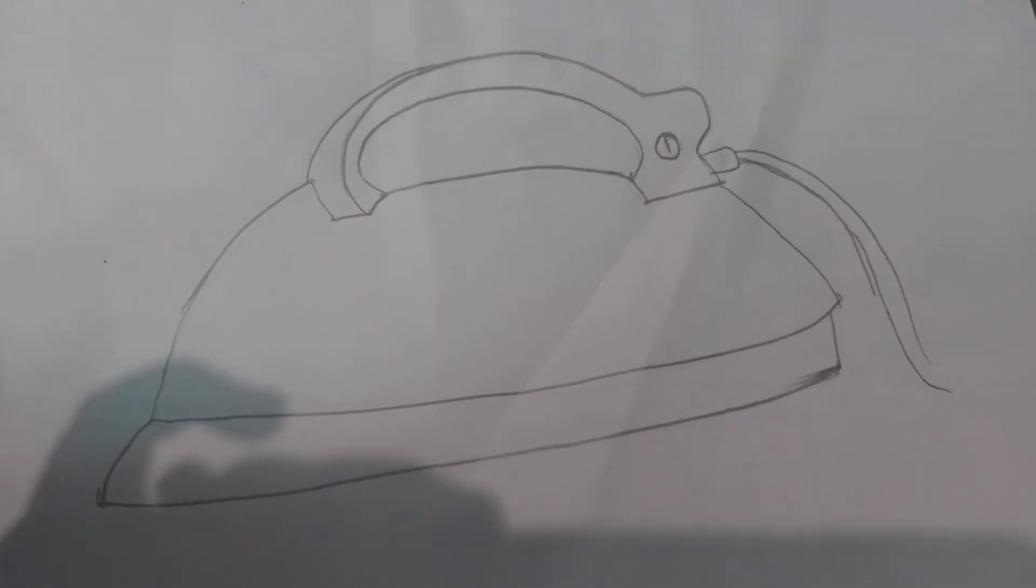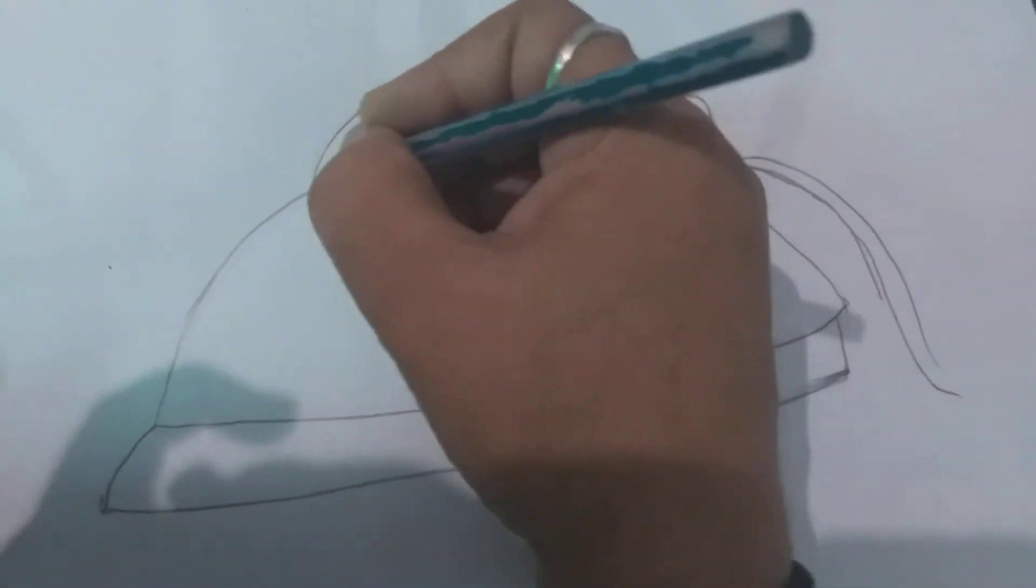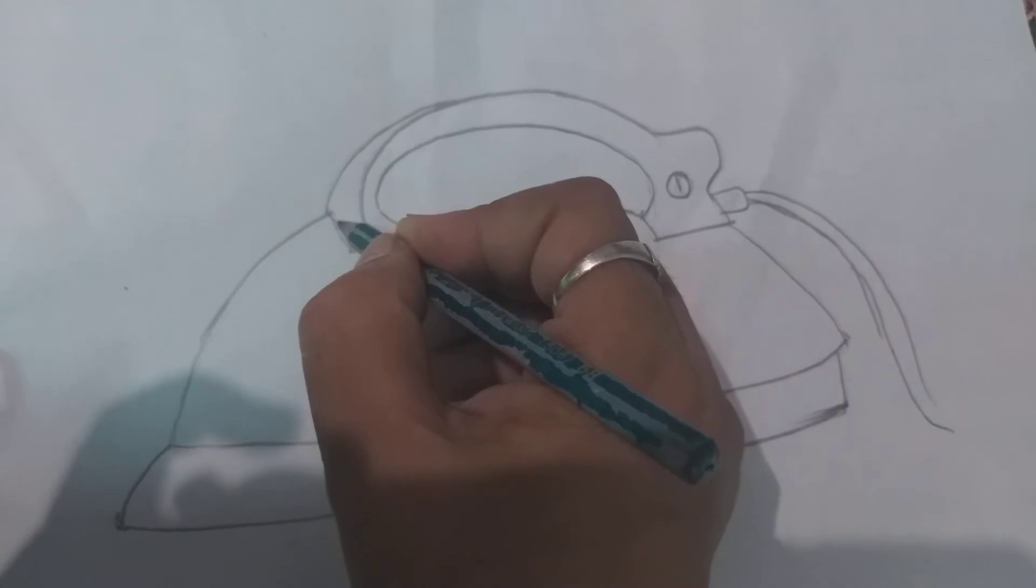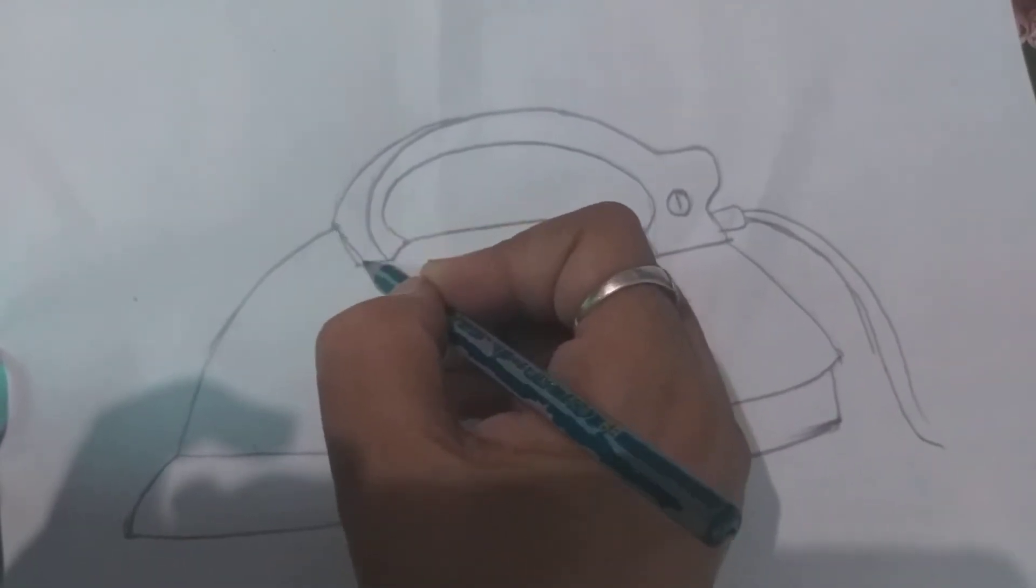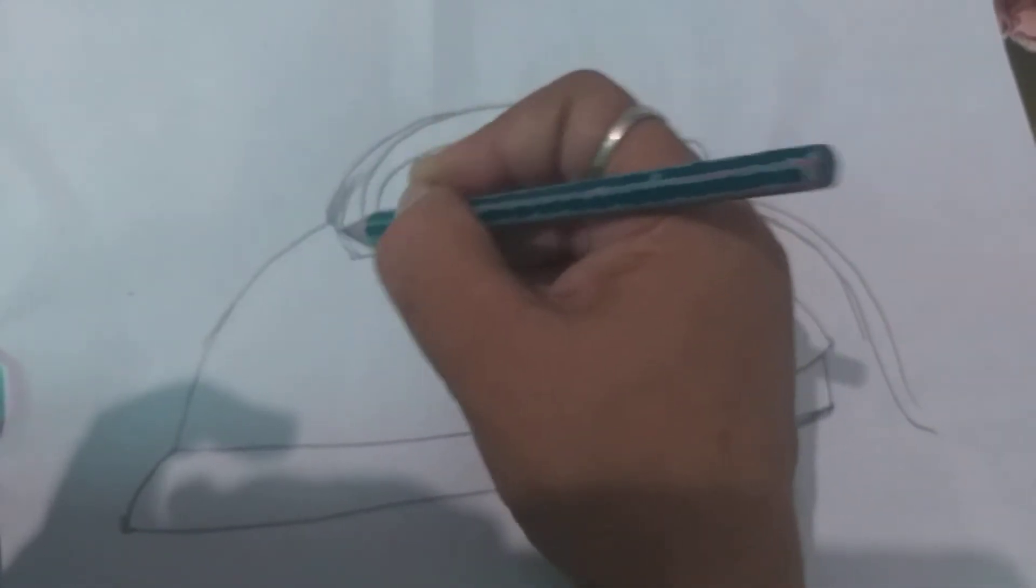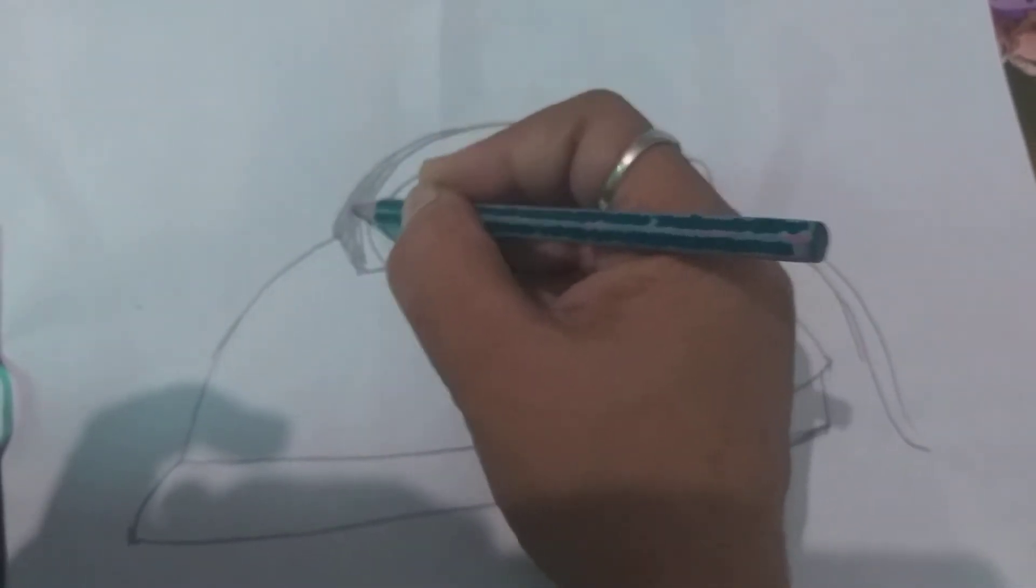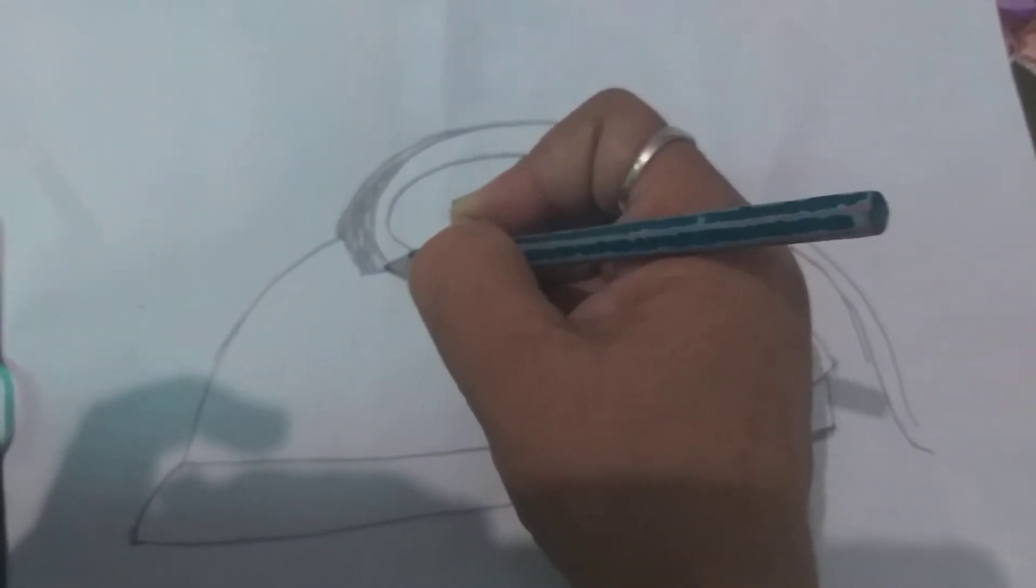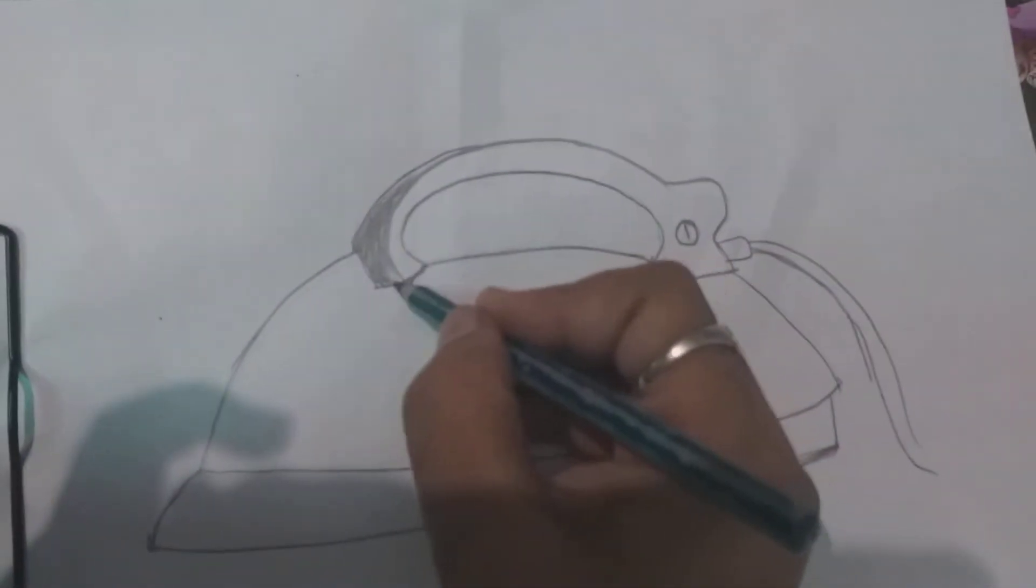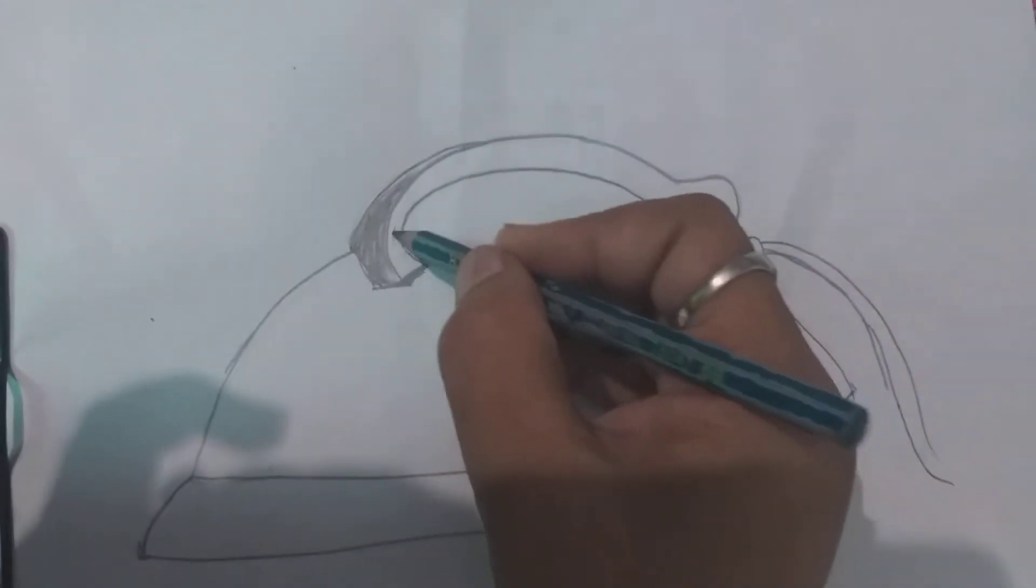And now I am going to start shading over it. All of you look carefully how I am trying to do this. You have to start the shading work from the upper part of your paper, start from the upper part of the paper, otherwise our paper will be dirty.